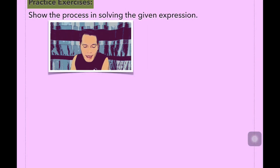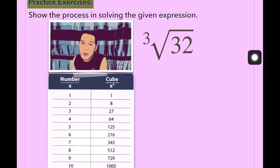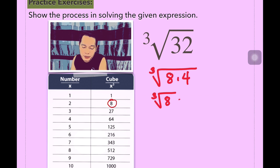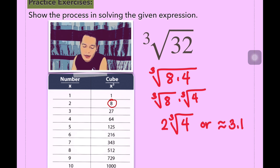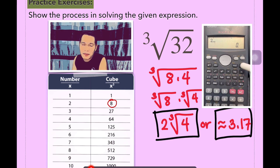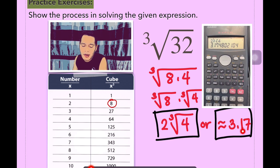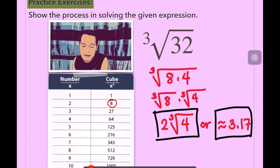The next example: we have the cube root of 32. Again, 32 is not a perfect cube, so let's try to recall the perfect cubes. 8 is one of the factors of 32, so we have the cube root of 8 times 4. The cube root of 8 is 2. Then we write 2 with the cube root of 4 beside it. You can get the value using a calculator — approximated to two decimal places, it is 3.17.